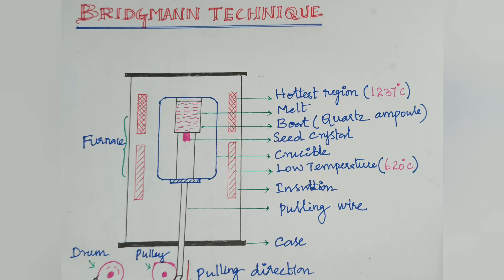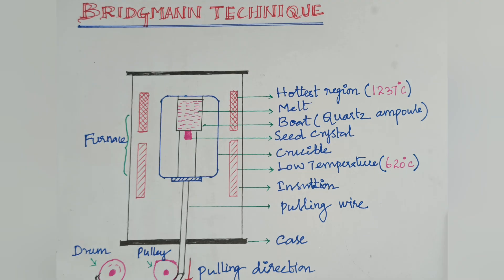This technique was noted by Bridgman and Stockbarger, but formally this method is called the Bridgman technique. The principle: this Bridgman technique is based on the principle of pulling from the melt for production of bulk single crystal.